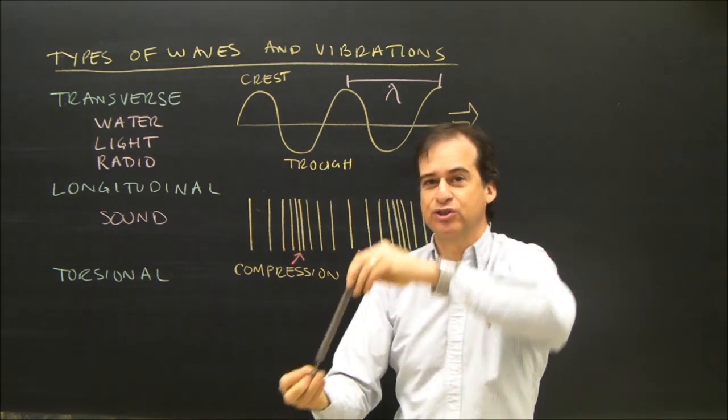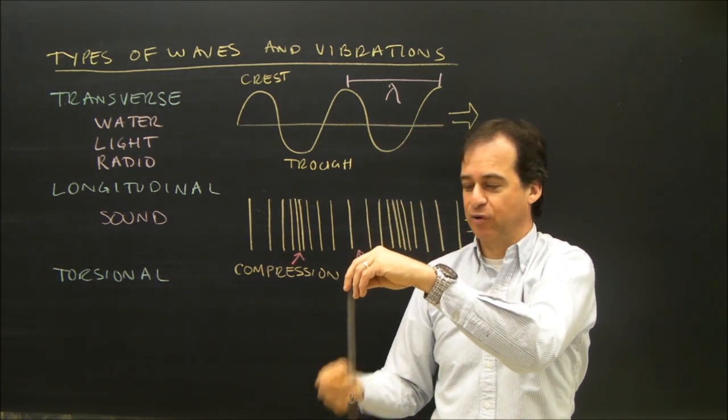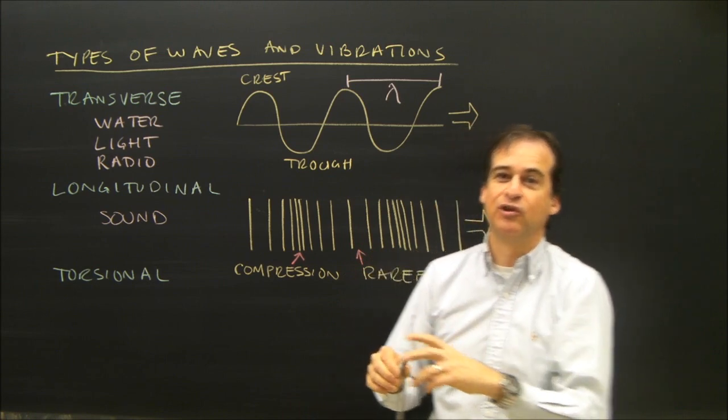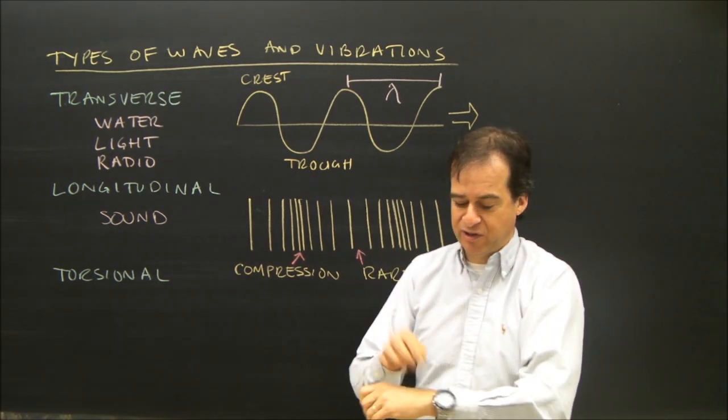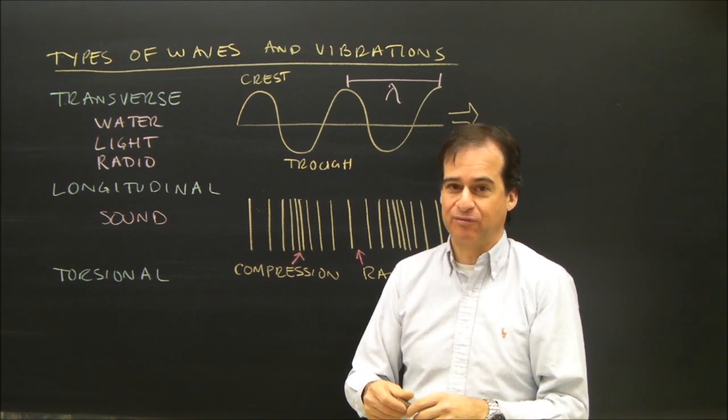And then I have something also called torsional. That's when I twist it, and it rotates back and forth and back and forth. You don't see this one very often, but if you look in an old watch, the one that you would wind, there's a torsional spring in there, so we do use that for something.